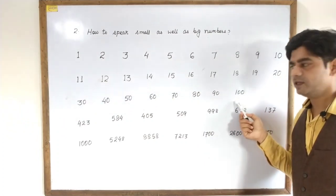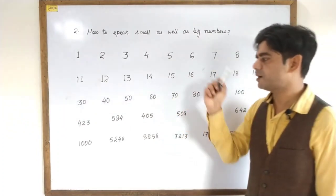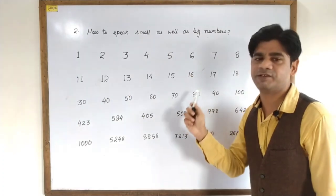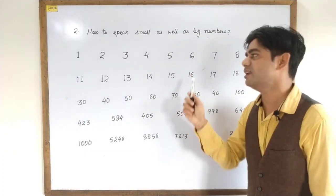After twenty you can add one, two, three, four and so on in an Indian accent. Now we will pronounce the tens: Thirty. Thirty. Forty. Forty. Fifty. Fifty. Sixty. Sixty. Seventy. Seventy. Eighty. Eighty. Ninety. Ninety. One hundred. One hundred.